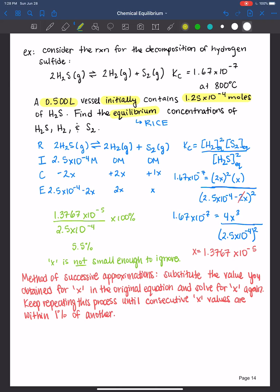This number here would be considered the first approximation for x. So we write down the formula again. 1.67 times 10 to the negative 7th is equal to 4x cubed over 2.5 times 10 to the negative 4th minus 2 times, and this is where you plug in that approximation 1.3767 times 10 to the negative 5th, and that's squared. You take the original equation, you substitute that first approximation in for x, and then you solve for x again.